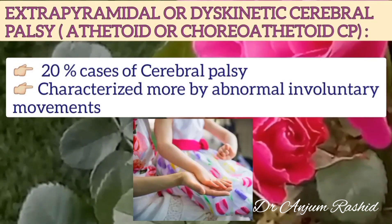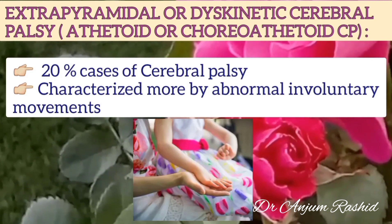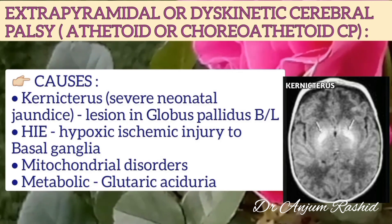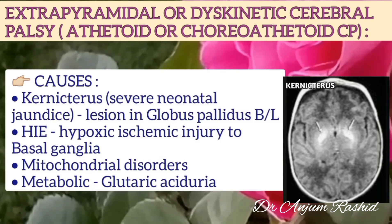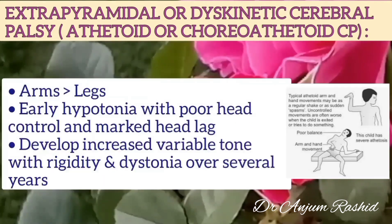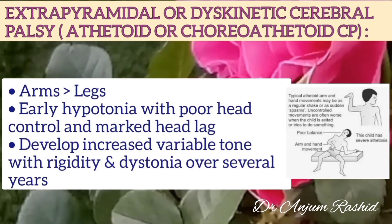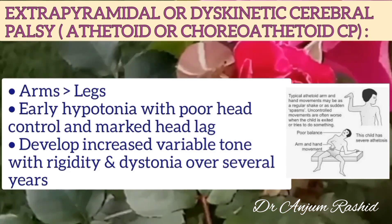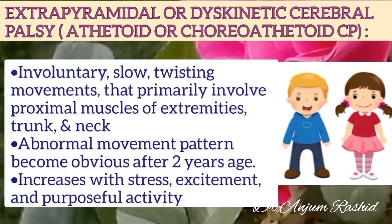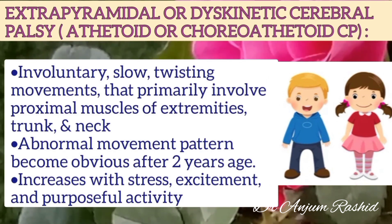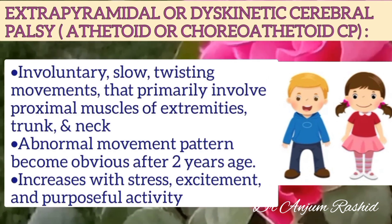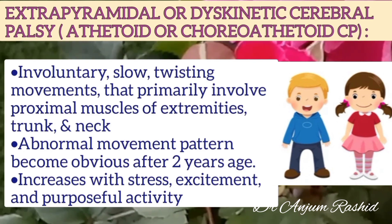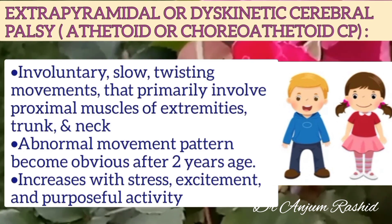Extrapyramidal or dyskinetic cerebral palsy accounts for 20% of cases, characterized by abnormal involuntary movements. Causes include kernicterus, hypoxic ischemic injury to the basal ganglia, mitochondrial disorders, or metabolic disorders such as glutaric aciduria. Arms are involved more than the legs. There is early hypotonia with poor head control and marked head lag, developing into increased variable tone with rigidity and dystonia over several years. Involuntary slow twisting movements primarily involve proximal muscles of extremities, trunk, and neck, becoming obvious after two years of age and increasing with stress, excitement, and purposeful activity.